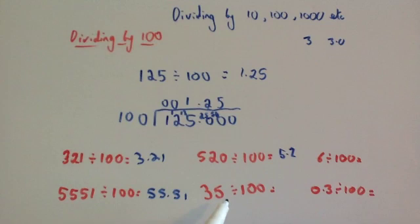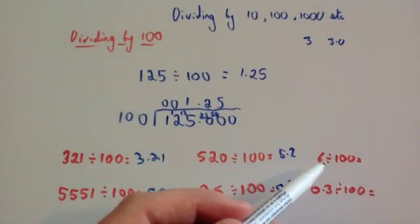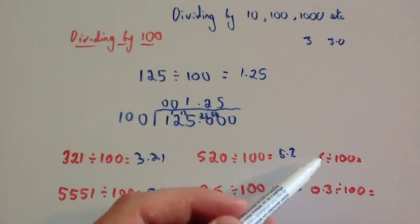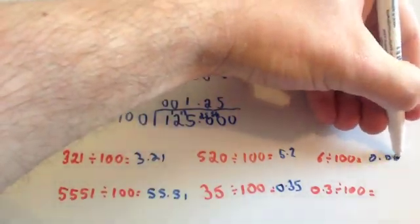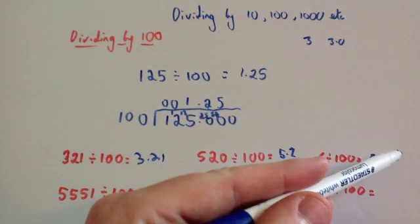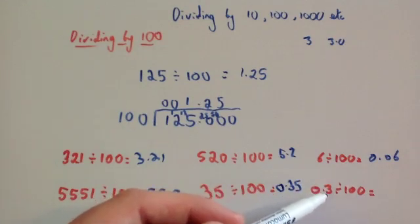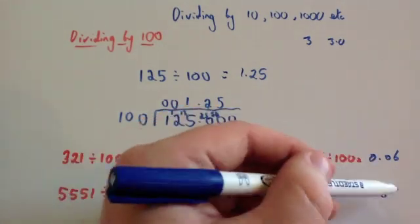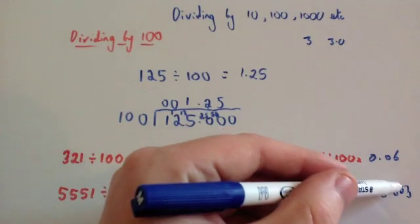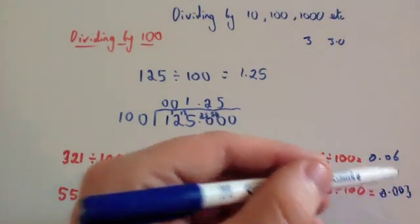35 divided by 100 — move the decimal place twice to the left, and we're going to get 0.35. 6 divided by 100 — the decimal place is here, we're going to move it twice to the left, and it gives you 0.06. 0.3 divided by 100 — the decimal place is here, we're going to move it twice to the left, and you would get 0.003.